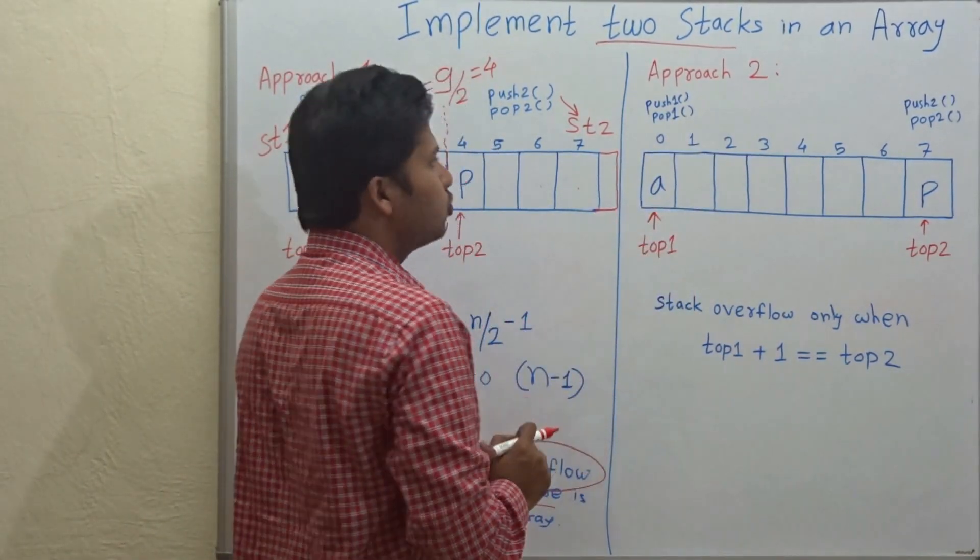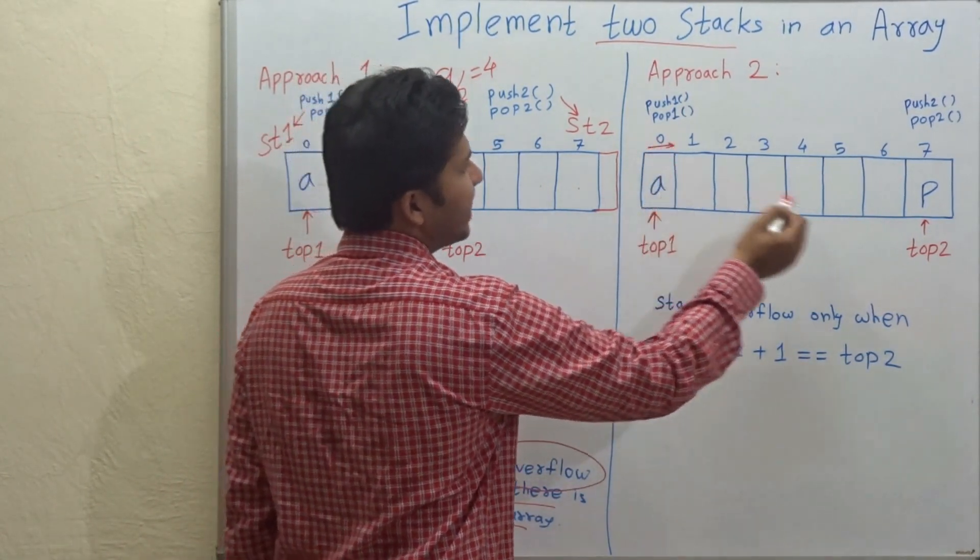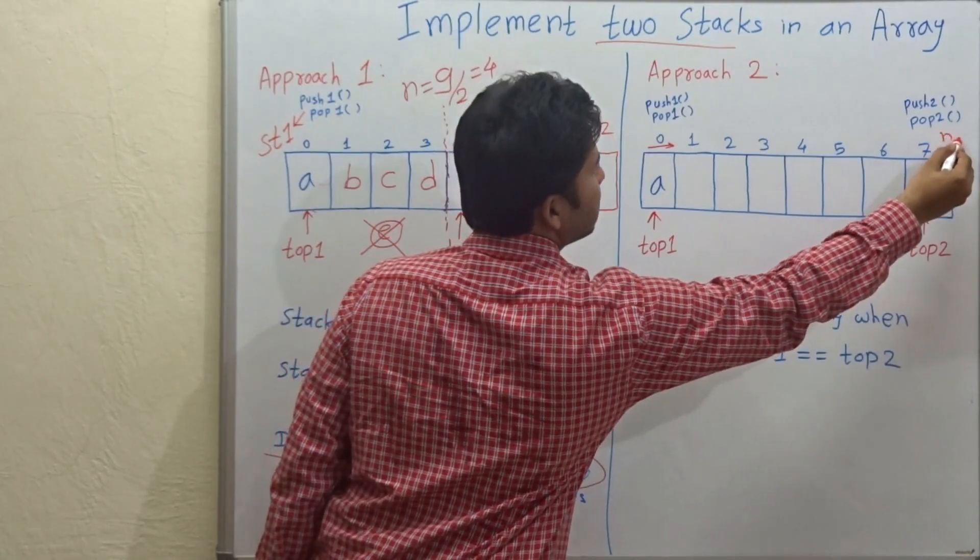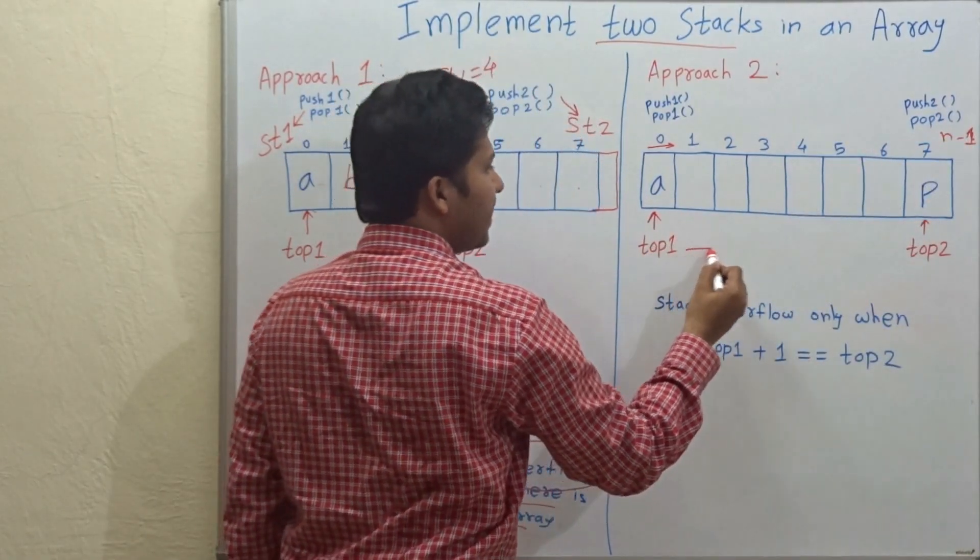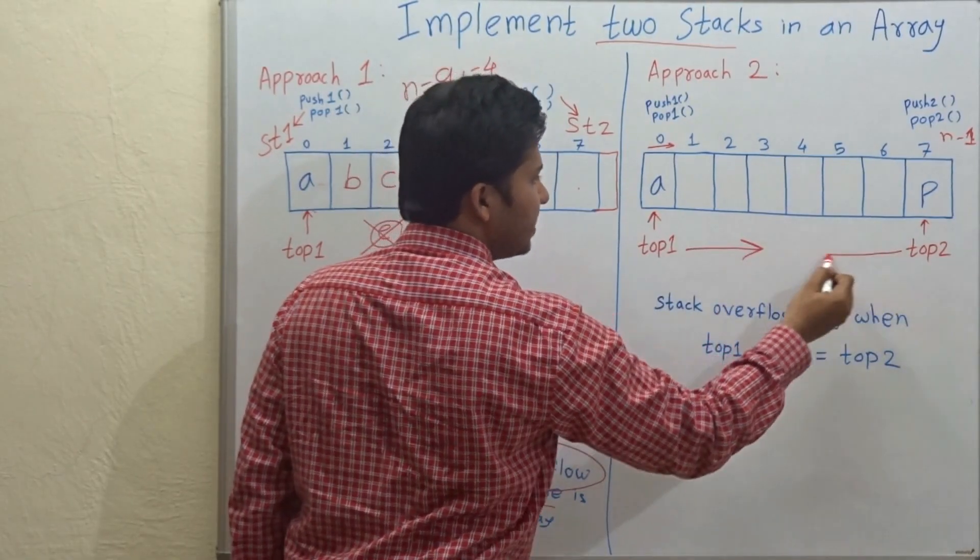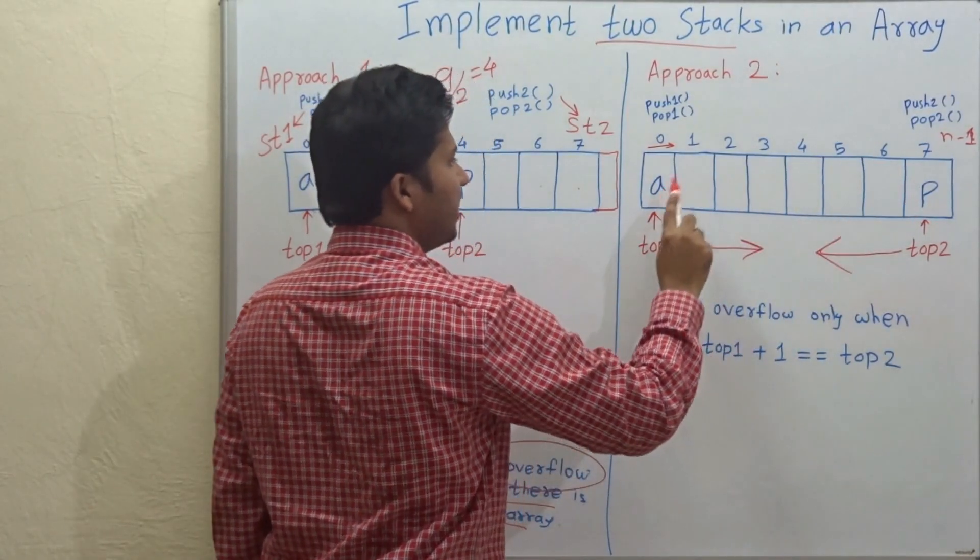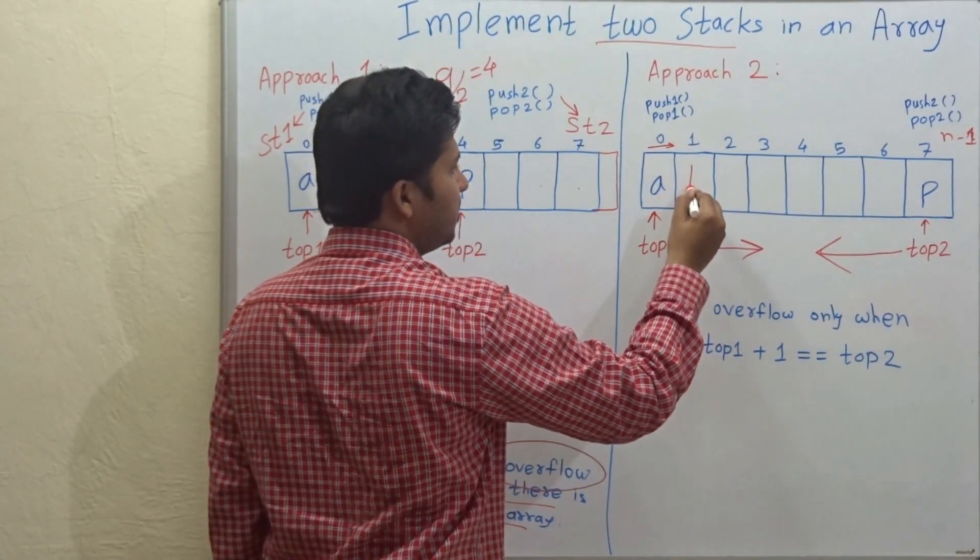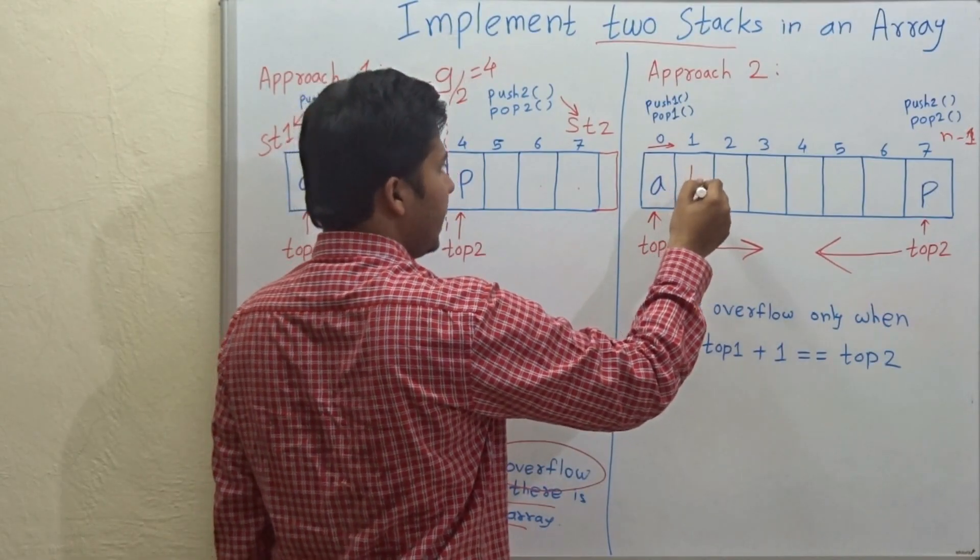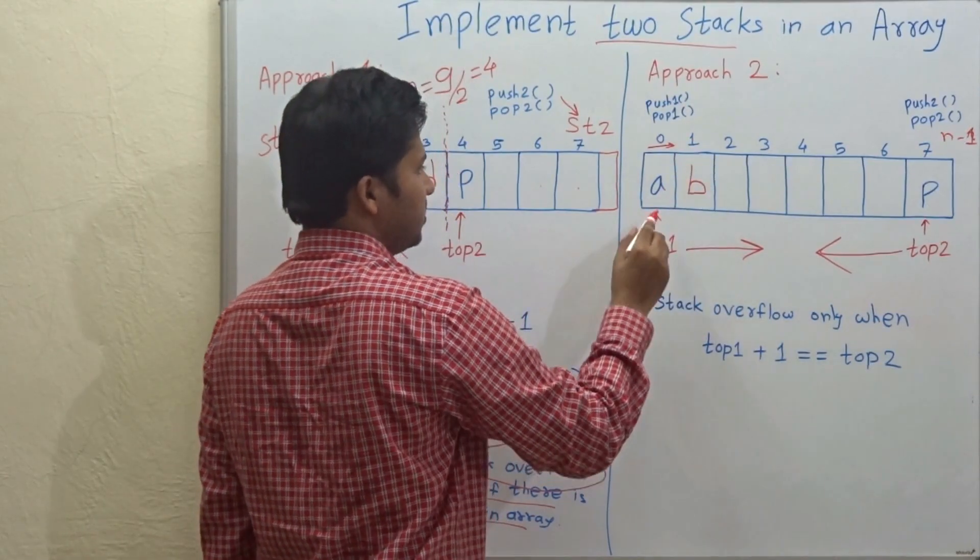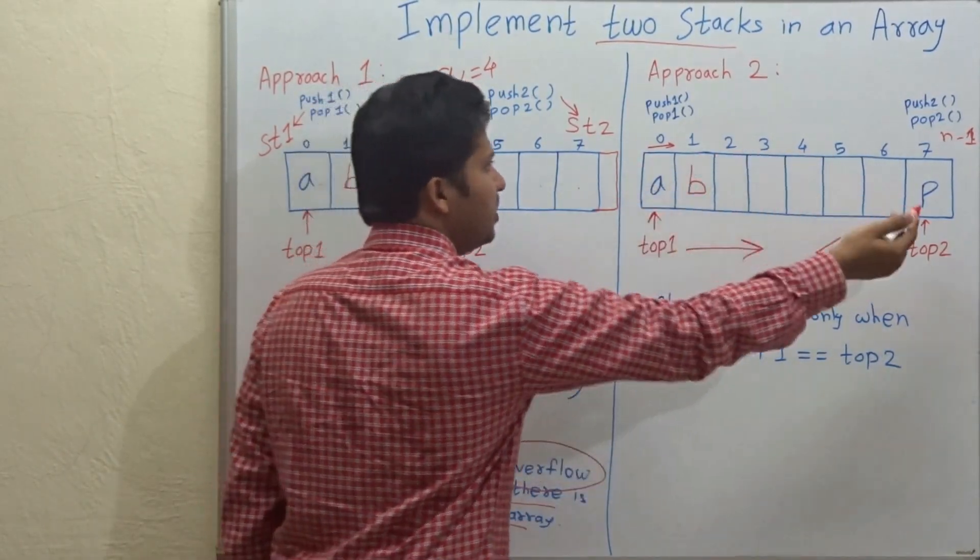So, in approach 2, the first array starts from 0 and the second array starts from n minus 1. So, after A, if we insert B, it will be inserted in this array at the first position, means in this direction, in the right direction. And, after P, for stack 2, this is the stack 2 here.